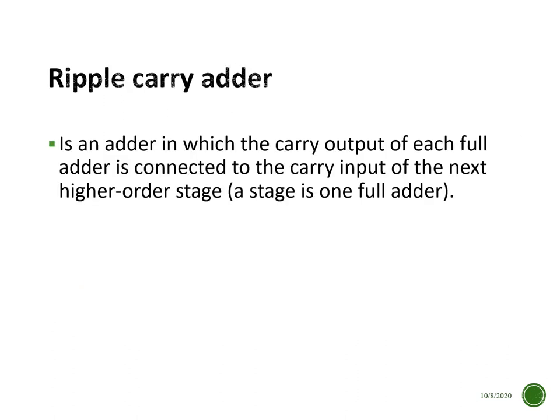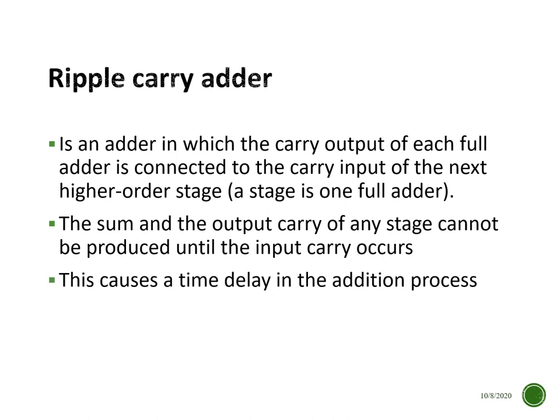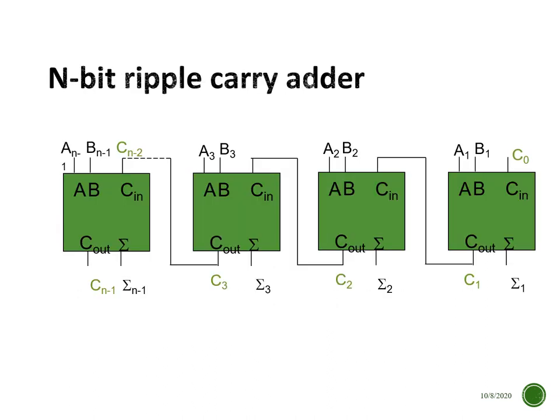A ripple carry adder is an adder in which the carry output of each full adder is connected to the carry input of the next higher-order stage, and each stage is one full adder. The sum and carry output of any stage cannot be produced until the input carry from the previous stage occurs, which causes a time delay in the addition process. Essentially, the ripple carry adder is the parallel adder, shown here as an M-bit configuration.